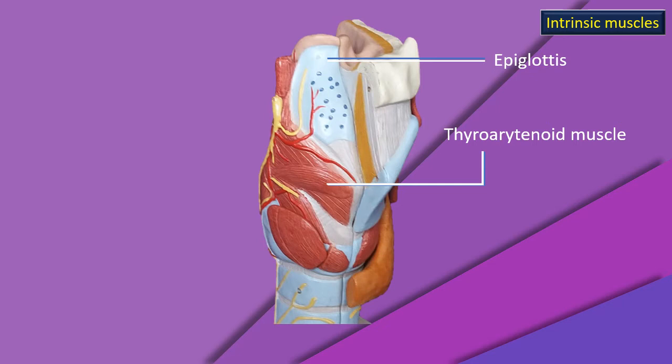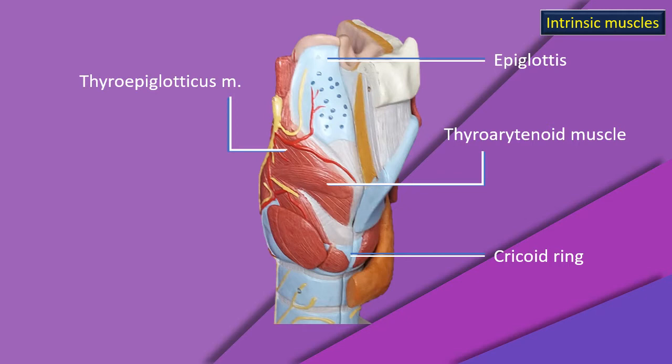Watch carefully the orientation of the thyroarytenoid fibers — it runs across the lateral wall of the larynx and is a fairly large piece of muscle. Next, there is another muscle running from the thyroid angle, going backwards and upwards and joining the epiglottis — that is the thyroepiglotticus muscle.